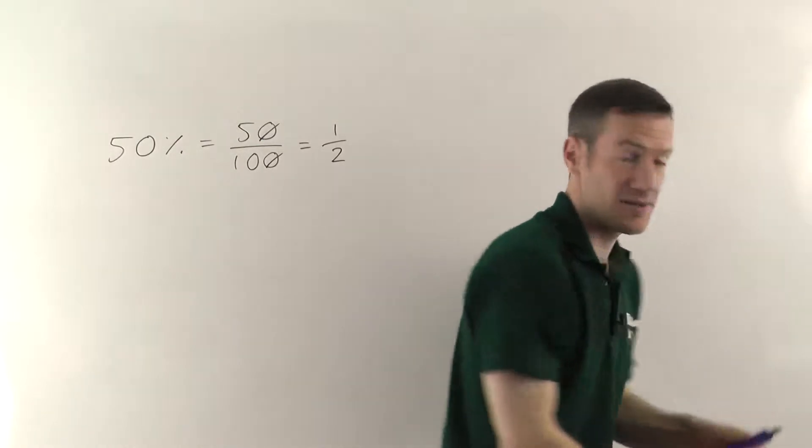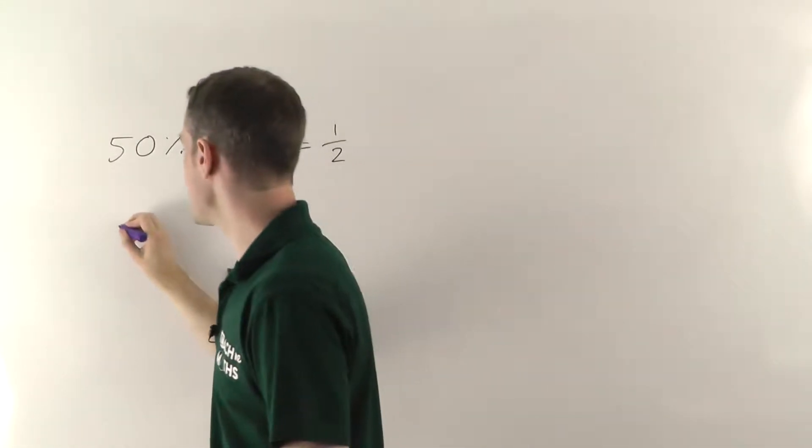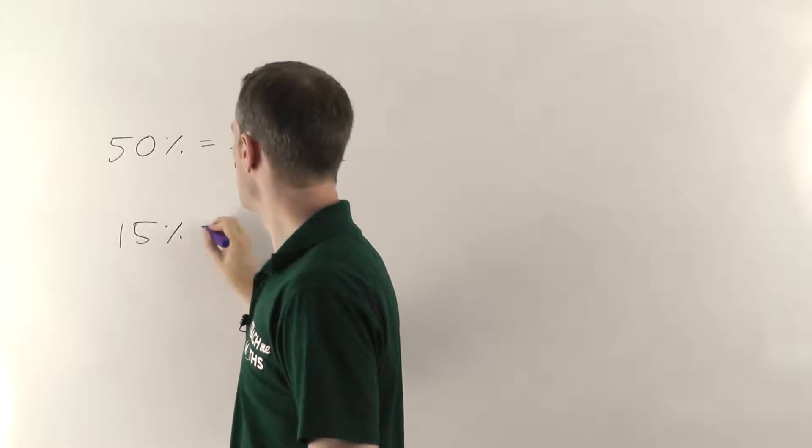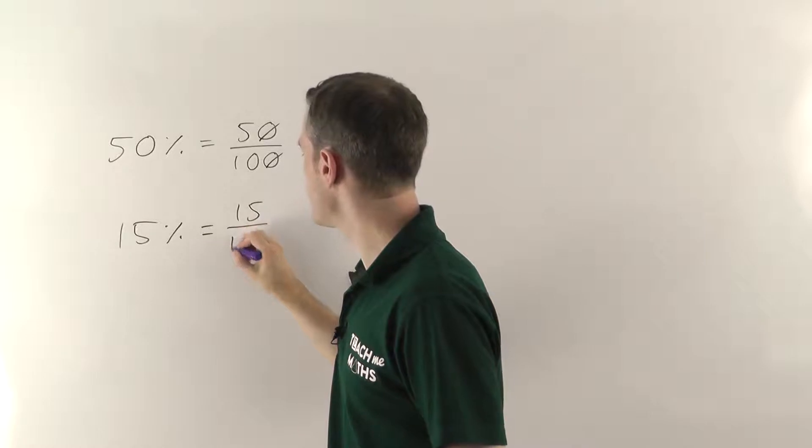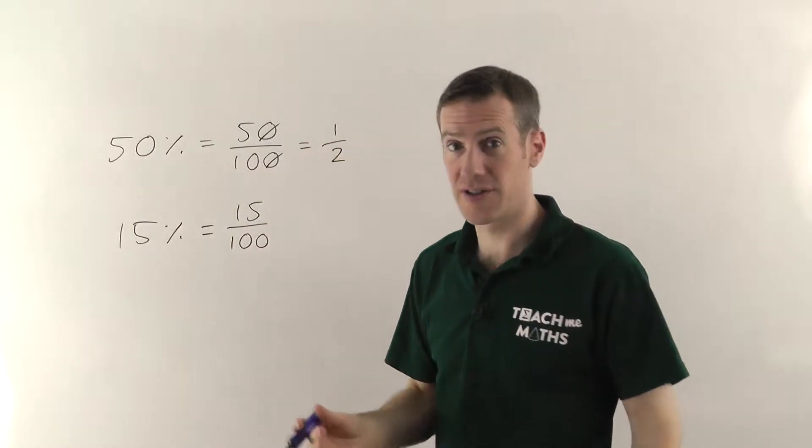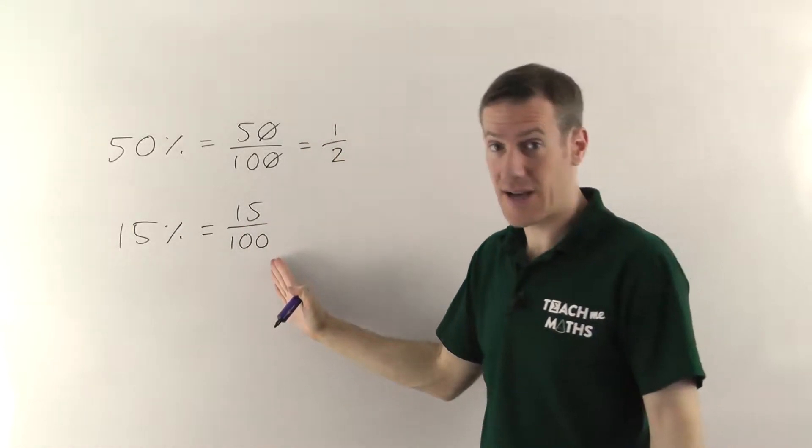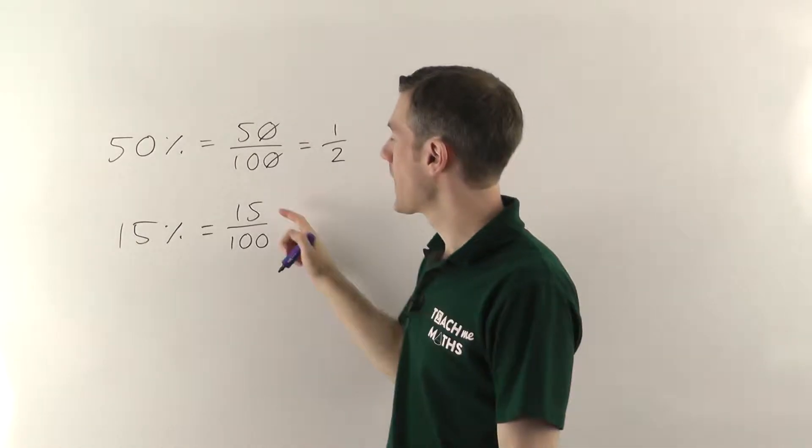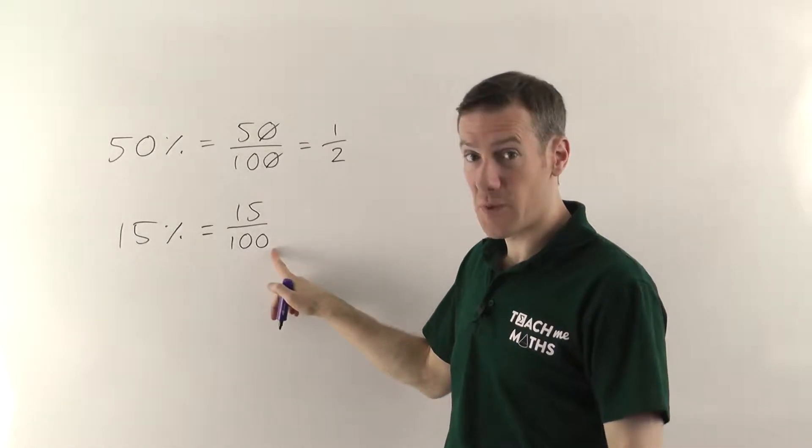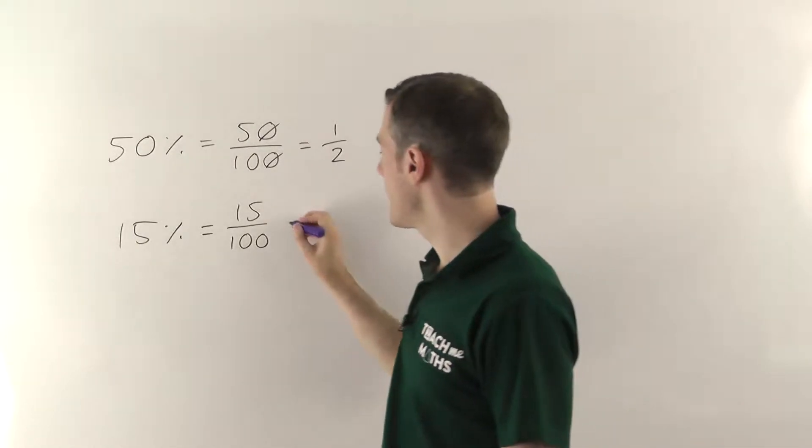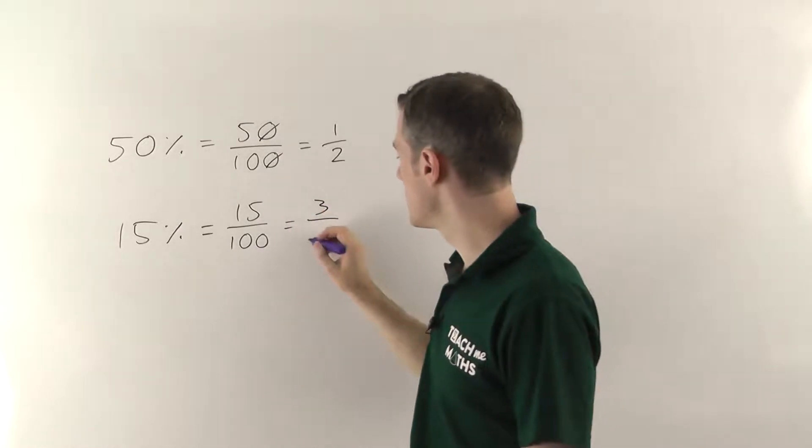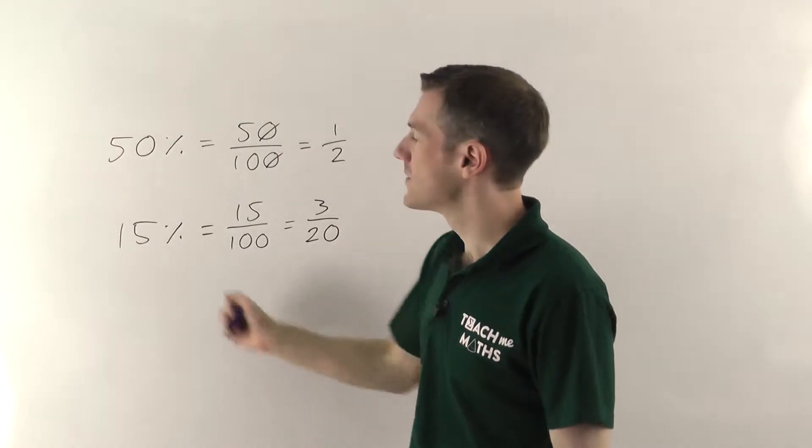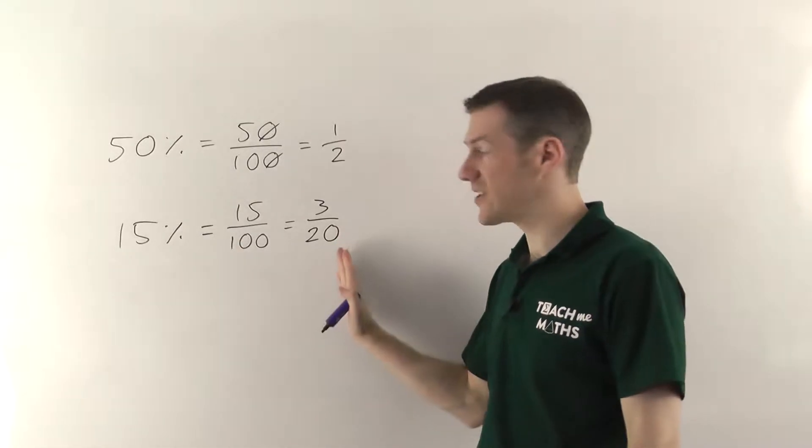If you had 15%, then again by definition that's 15 out of 100. It's 15 hundredths. And then you just cancel the fraction down. You must always cancel fractions. So 15 and 100 are both divisible by 5. 5s into 15 go 3 times. 5s into 100 go 20 times. So 15% is the same as 3 twentieths.